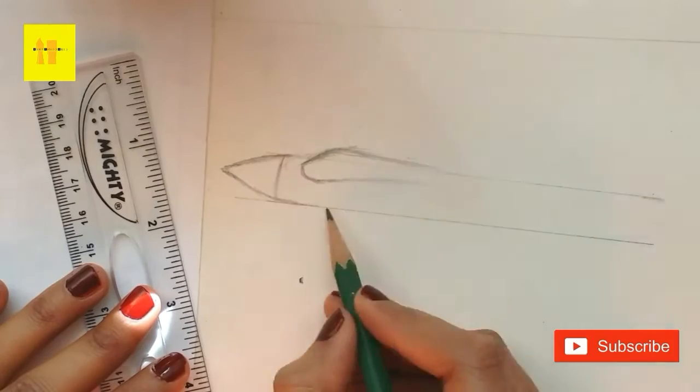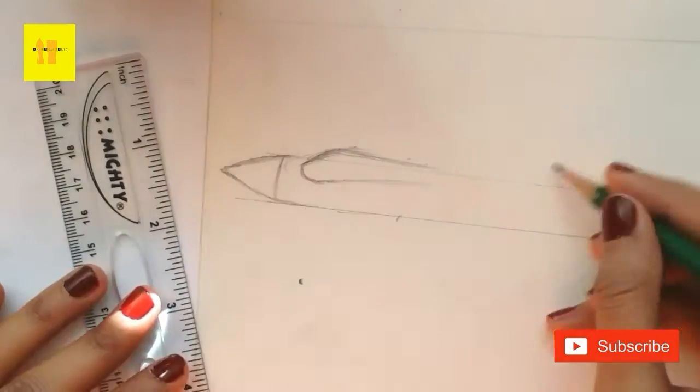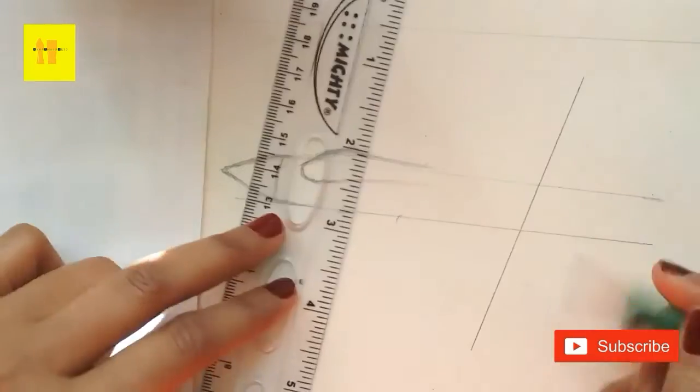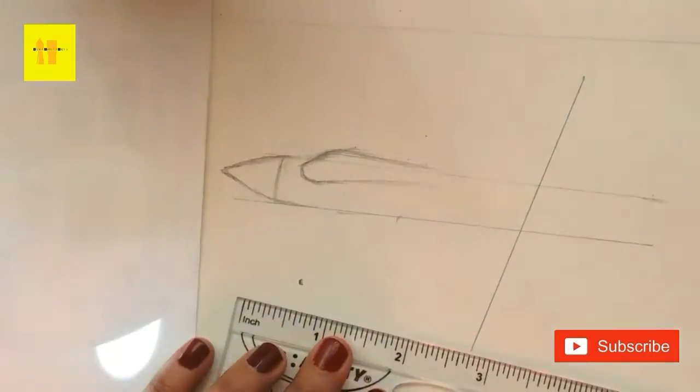In this sketch I am also using 6B pencil for the front part of the plane. Then I will use 6B pencil for shading to the different parts of the sketch and blend it well.